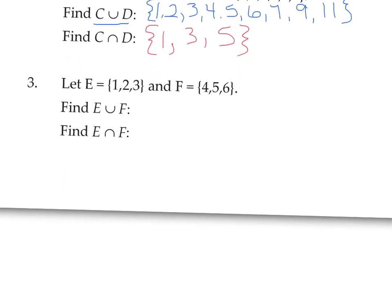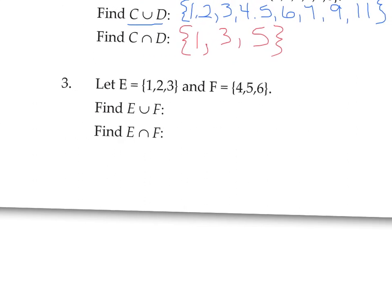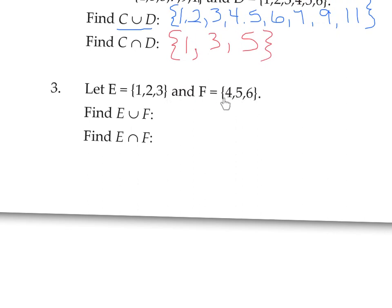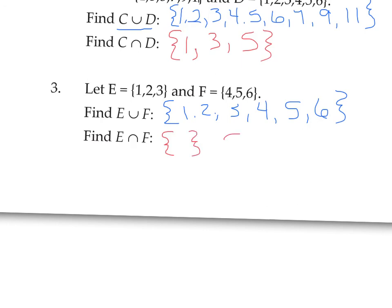One more example. Set E is {1, 2, 3} and set F is {4, 5, 6}. The union of E and F includes all elements from both: {1, 2, 3, 4, 5, 6}. For the intersection: none of the elements from F are in E and none from E are in F — they have no elements in common. So the intersection is the empty set, written as two empty braces {}.